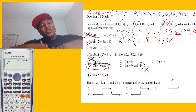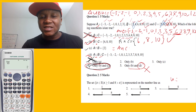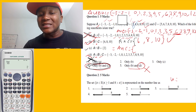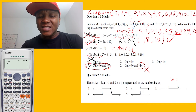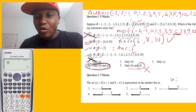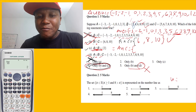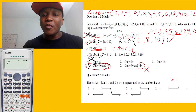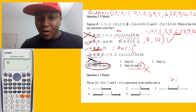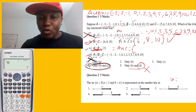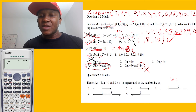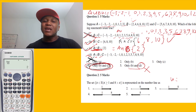Now for A intersection B: A and B — what do they have in common? Negative three, negative two — not in B. Zero — not in B. Two — yes, two is common. Three — not in B. So A intersection B equals {2}. That is true, and statement C is confirmed true.